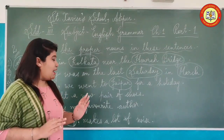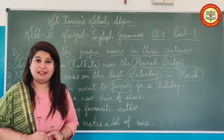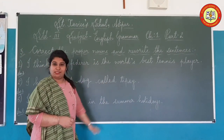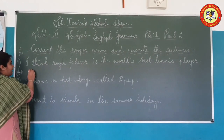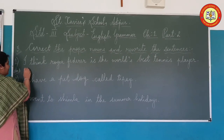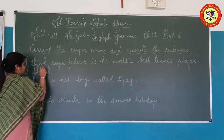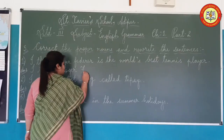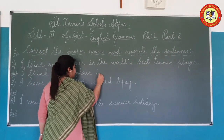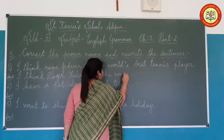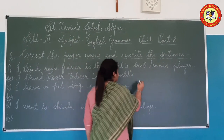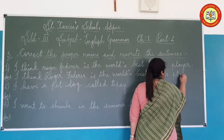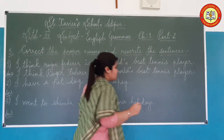You have to revise the common noun and proper noun — the definitions and the exercises — properly and thoroughly. In question 3, what we have to do is correct the proper nouns and rewrite these sentences. First sentence: 'I think roger federer is the world's best tennis player.' The answer — we have to rewrite the same with capital letters: 'I think Roger Federer is the world's best tennis player.'